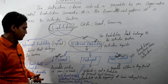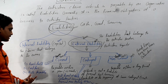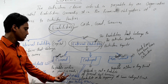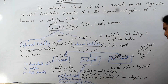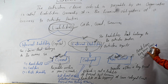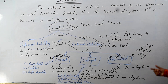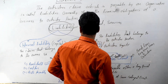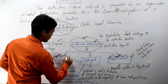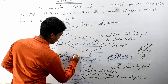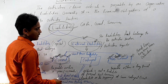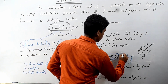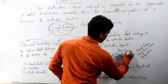To recap: internal liabilities include capital; current liabilities include bank overdraft, creditors, and bills payable; contingent liabilities include bill discounted at bank, collateral securities, and financial cases pending in court; and non-current liabilities include bank loan, long-term loan, and debentures. Remember, current liabilities are also known as short-term liabilities, and non-current liabilities are also known as long-term liabilities.